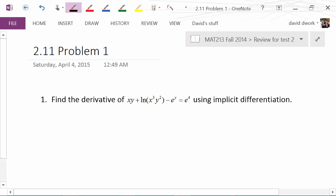Okay, so here we are, section 2.11, problem number one. Section 2.11 had two main concepts: one was related rates, and the other was implicit differentiation.